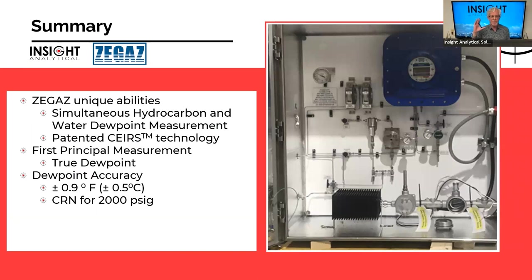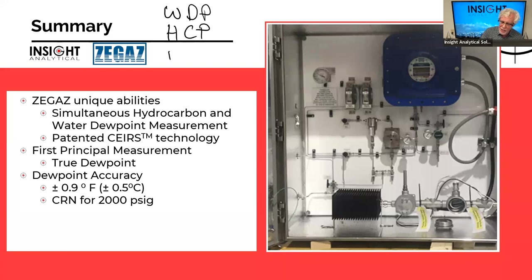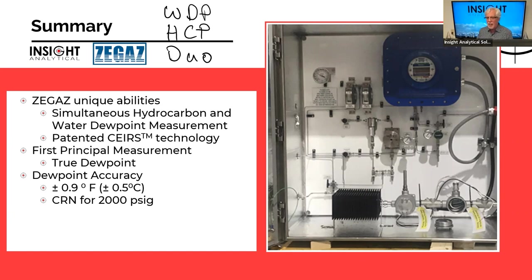In summary, the Z-Gas has really unique abilities — especially the ability to measure hydrocarbon and water dew point simultaneously. If you only need water or only hydrocarbon dew point, it's available in those configurations: the WDP for water dew point, the HDP for hydrocarbon dew point, and the DUO for both. It's a first-principles measurement and a true dew point using the patented SEERS technology with high accuracy. It's arguably the most accurate chilled mirror type device given its sophisticated method of detecting when the dew point occurs and which dew point it is. CSA and CRN certified for full Canadian installation.